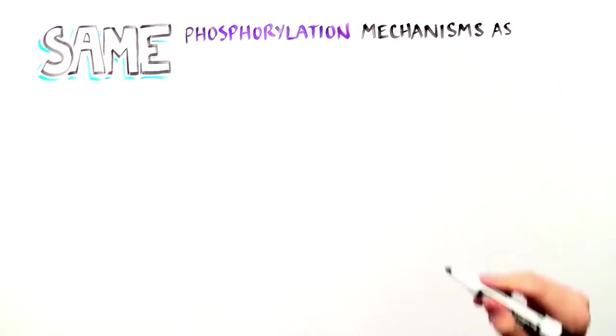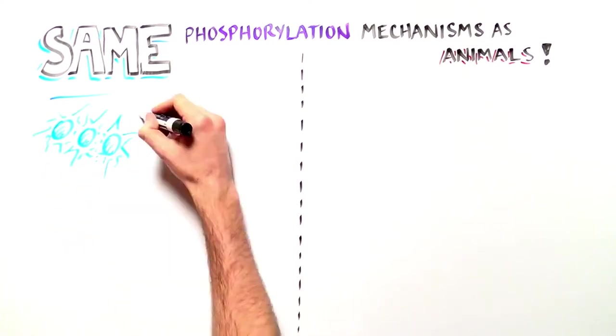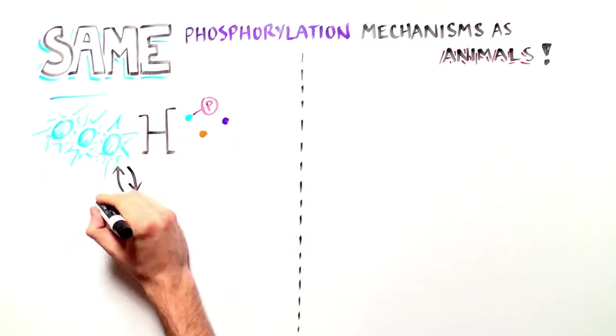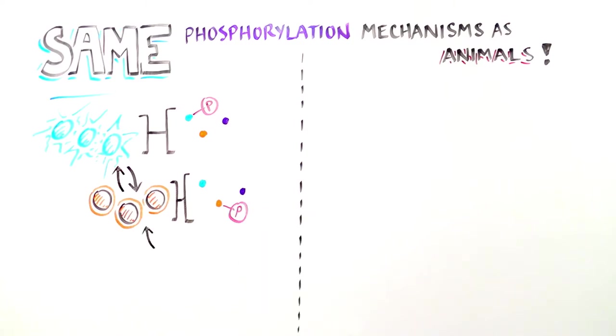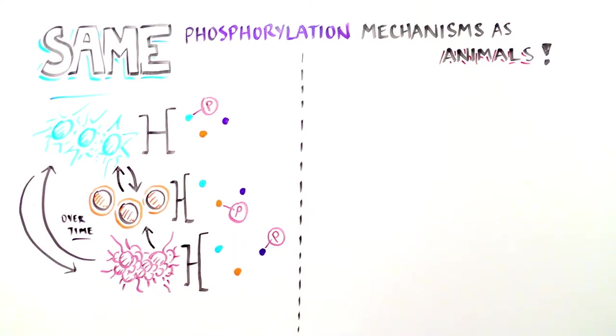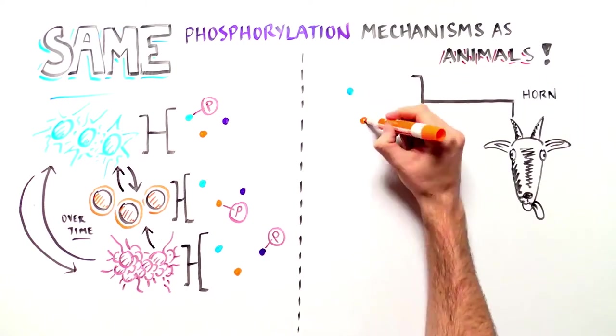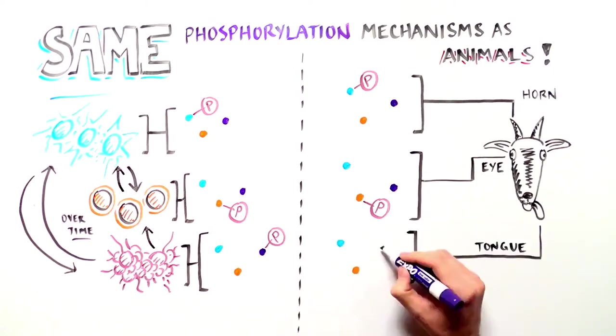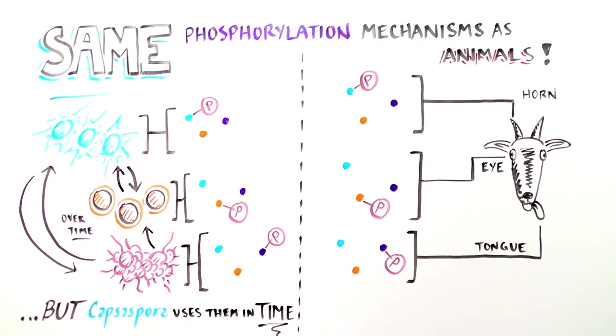Thus, Capsospora and animals share the same mechanisms to differentiate cells by changing the protein profile and phosphorylation. However, Capsospora uses these mechanisms to differentiate cells during the transition to different cell stages of its life cycle, known as temporal cell differentiation. While animals not only differentiate cells in time, but also in space, spatial cell differentiation.